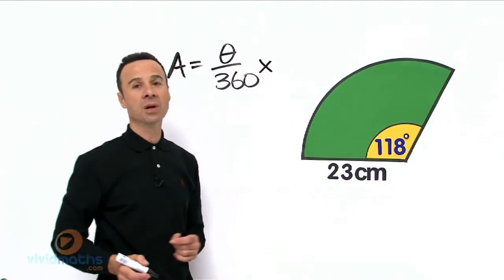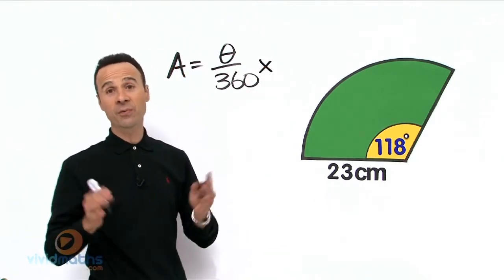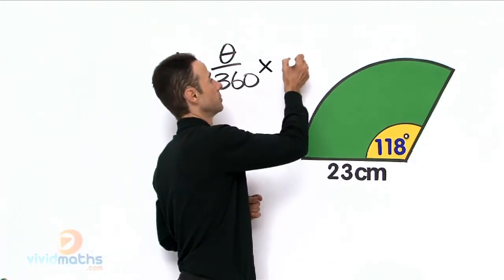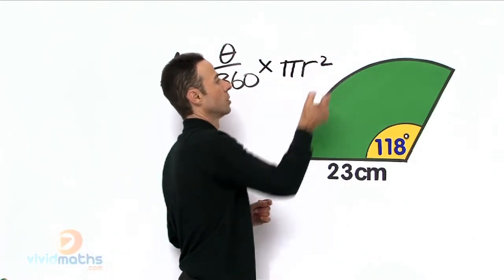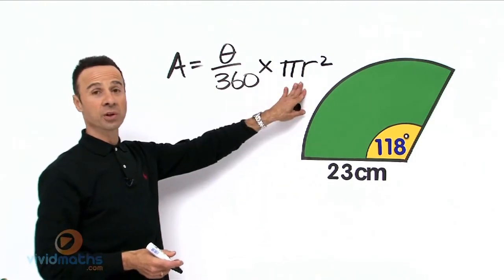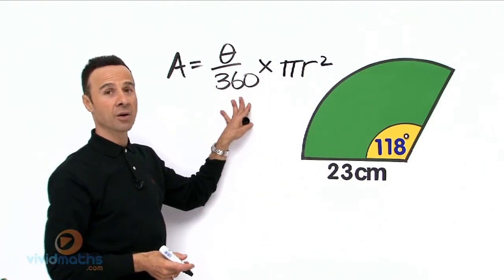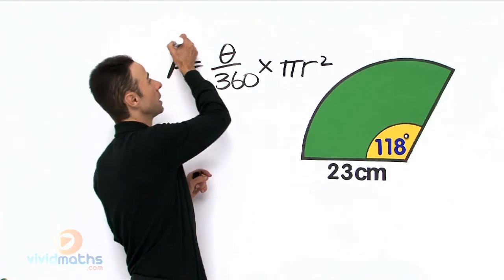That times the area, the formula for the area of the circle which many of us have heard before. So there is the area of the full circle and here is the fraction part of the whole circle. This is our formula.